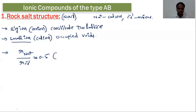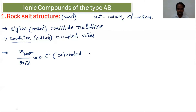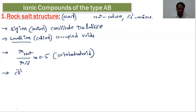From the radius ratio rules — if you don't know the radius ratio, please watch the previous video — a radius ratio of 0.5 corresponds to octahedral voids. So octahedral voids are generated. Cl⁻ is the big anion that constitutes the lattice, and in rock salt, Cl⁻ ions form an FCC lattice.